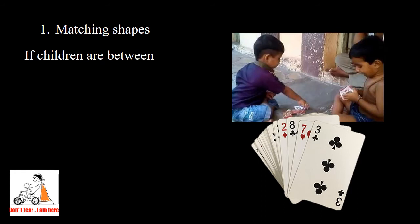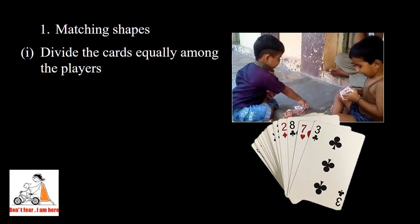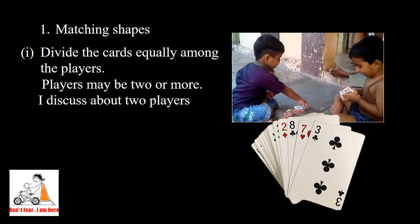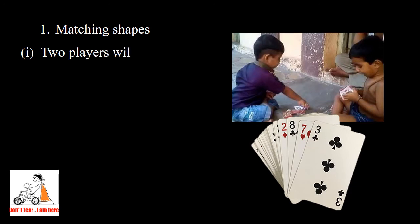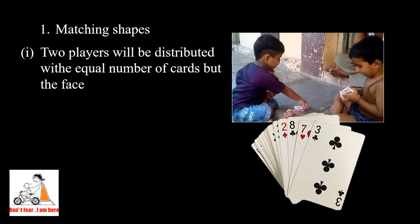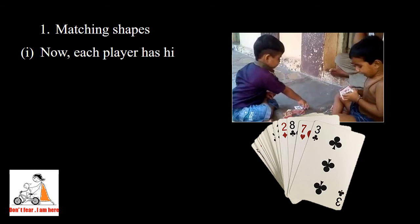First is matching shapes. If children are between age group 3 to 5 years, they can play this game. The procedure is: divide the cards equally among the players. Players may be two or more, but I am discussing only two players. Two players have equal number of cards distributed, but the face of cards will not be shown, it will be down.